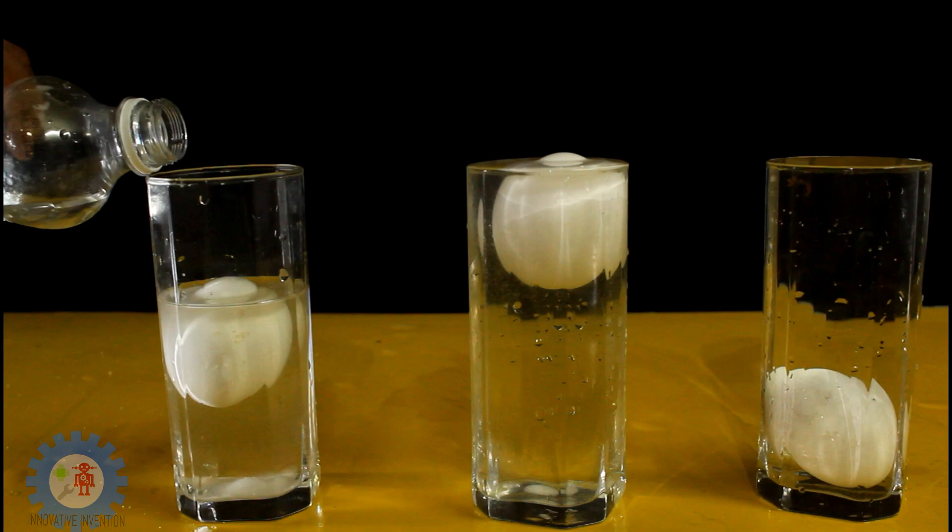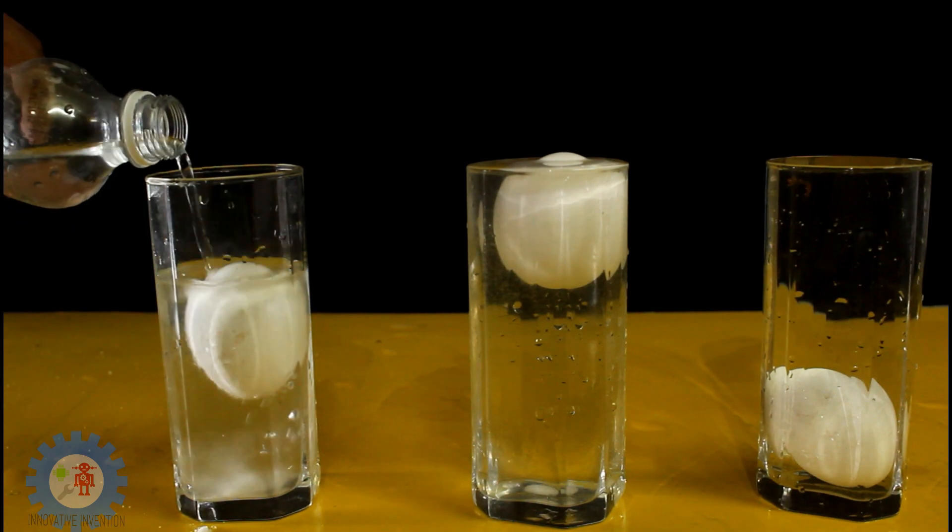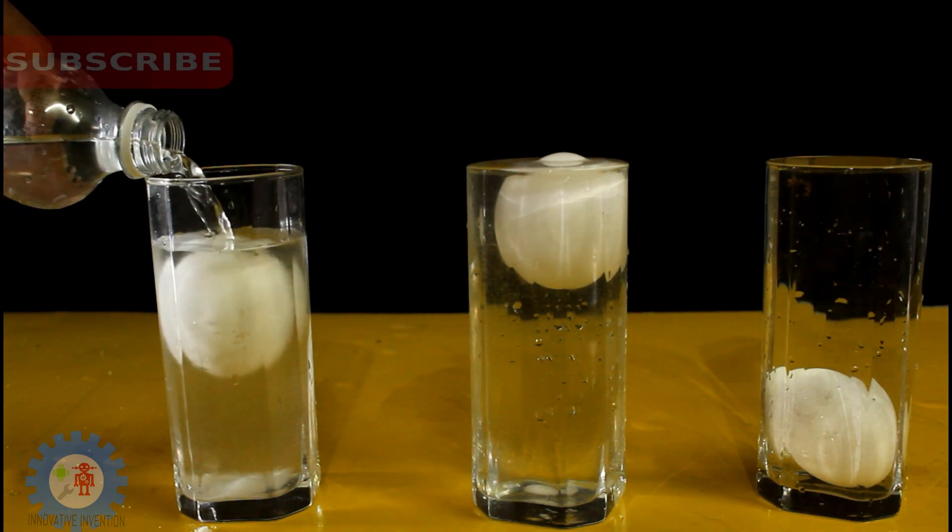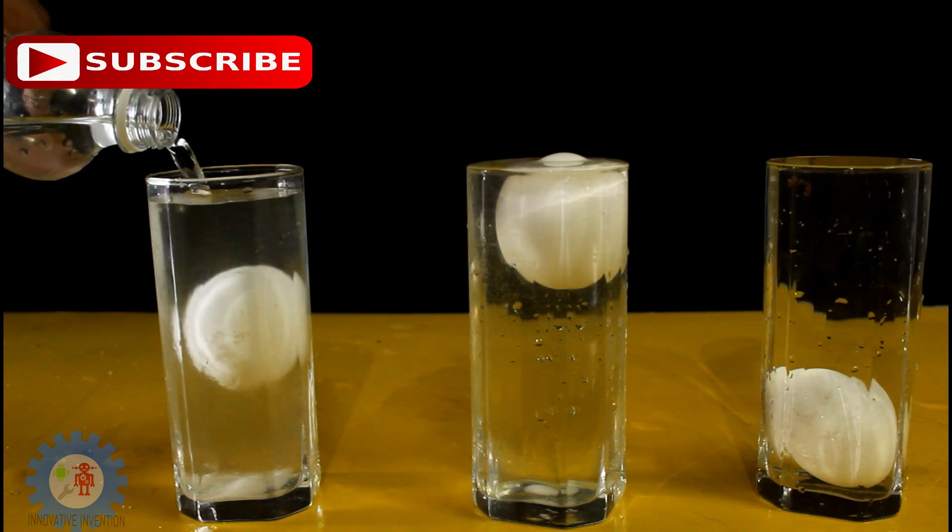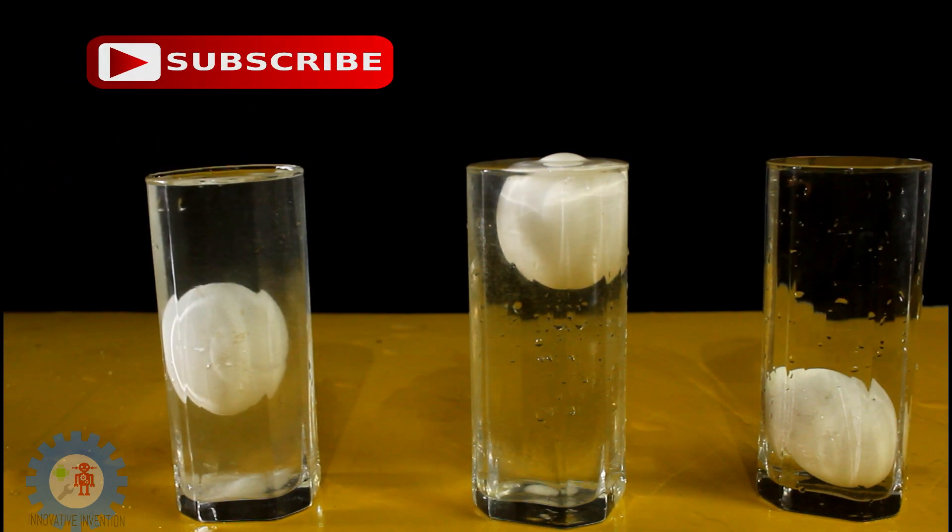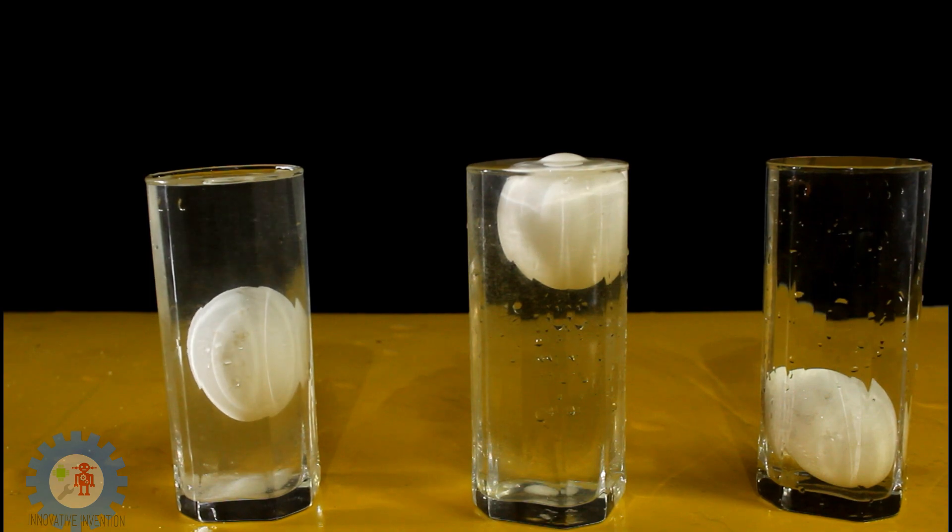To find out the density of the third beaker we'll be pouring excess pure water into the beaker, and we can see the egg still floats halfway in the glass where it stabilizes at the salt water solution.